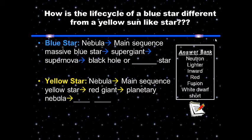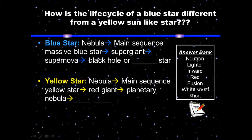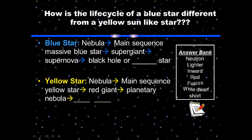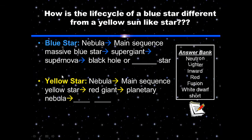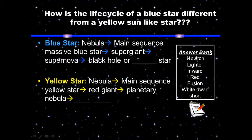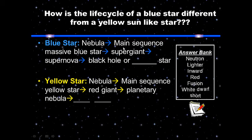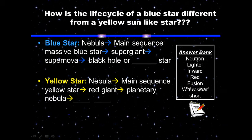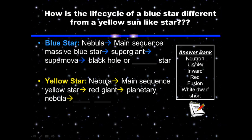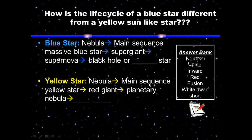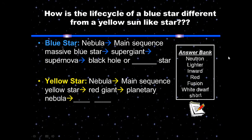Let's summarize the life cycles. A blue star: nebula → main sequence → supergiant → supernova → black hole or neutron star. Our yellow Sun: nebula → main sequence yellow star → red giant → planetary nebula → white dwarf. Write your question in the question section and your answer below. Our Sun has a blank billion-year total lifespan — it's very important to know this, and that we're about halfway through its life right now.